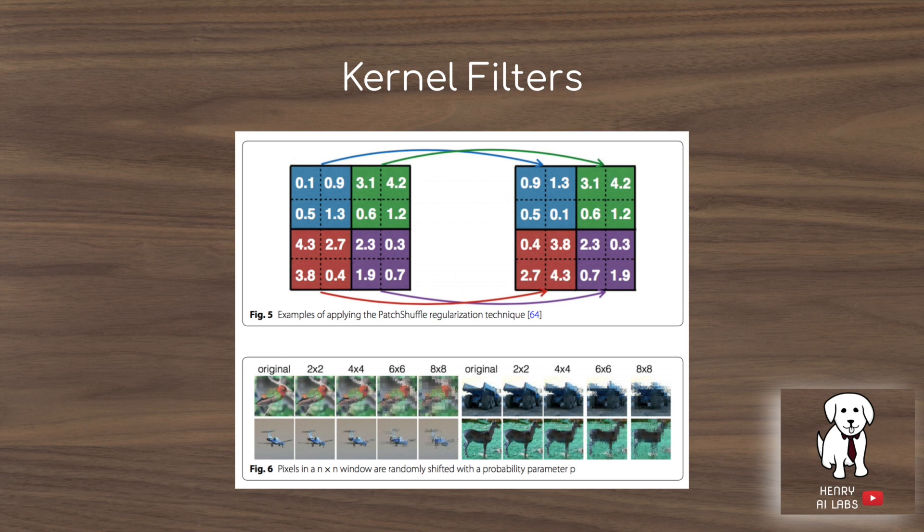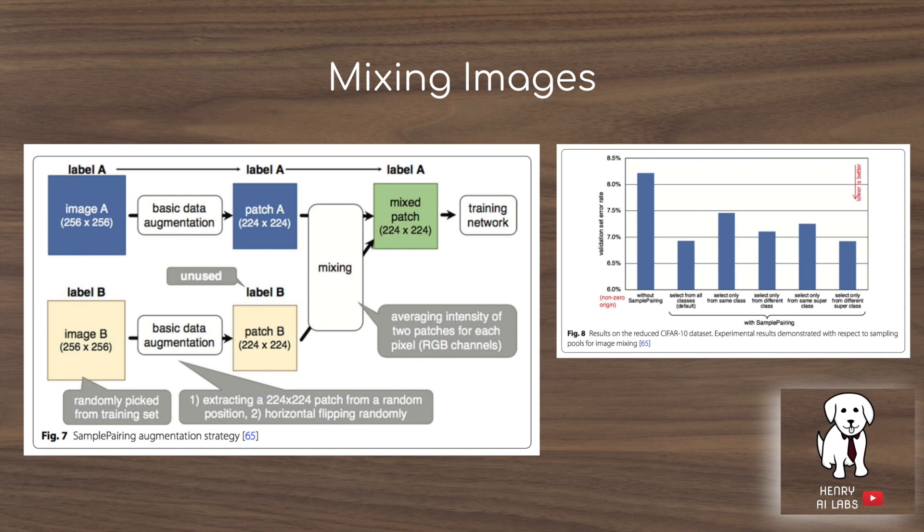Another interesting idea is kernel filters. This includes the patch shuffle regularization technique, where they randomly shuffle pixels within a 4×4 sliding window.